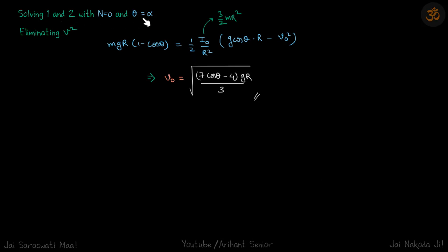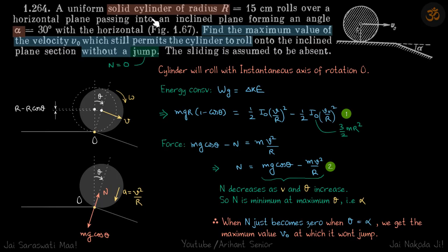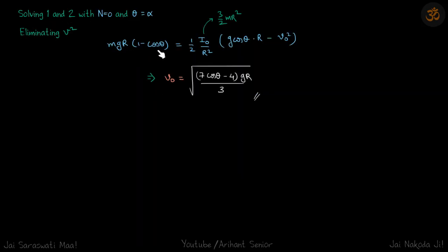Solving equations 1 and 2 with N = 0 and theta = alpha, we have two equations and two unknowns. Substituting I₀ = 3mr²/2 and simplifying, we get the maximum initial velocity: v₀ = √[(7cosα - 4)gr/3]. This is the maximum v₀ at which the cylinder will continue to roll down the slope without jumping.